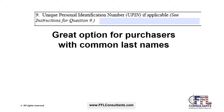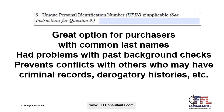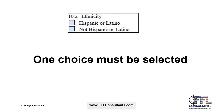Box 9 asks for a unique personal identification number, otherwise known as a U-PIN. This is a great option for purchasers with common last names or those who have had problems with past background checks. A U-PIN can prevent conflicts with others who have a similar last name with criminal records, and when provided it can expedite the transfer process. Box 10A asks for ethnicity — either Hispanic or Latino, or not Hispanic or Latino. Your buyer simply needs to select one.